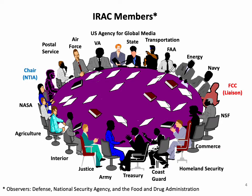This slide shows the 19 federal agencies that make up the IRAC membership. The IRAC bylaws, contained in Chapter 1 of the NTIA manual, provide that the basic role of agency representatives appointed to serve on the IRAC is to function, when in committee, in the interest of the United States as a whole. Most agencies have a primary representative and one or more alternates. The names and contact information for the current IRAC members are available on the NTIA website at www.ntia.gov/category/IRAC. There are three observer agencies, and the FCC has a liaison representative and alternates. NTIA appoints the chairperson and vice chairperson of the IRAC, and an agency vice chairperson is elected by the IRAC members for a three-year term.